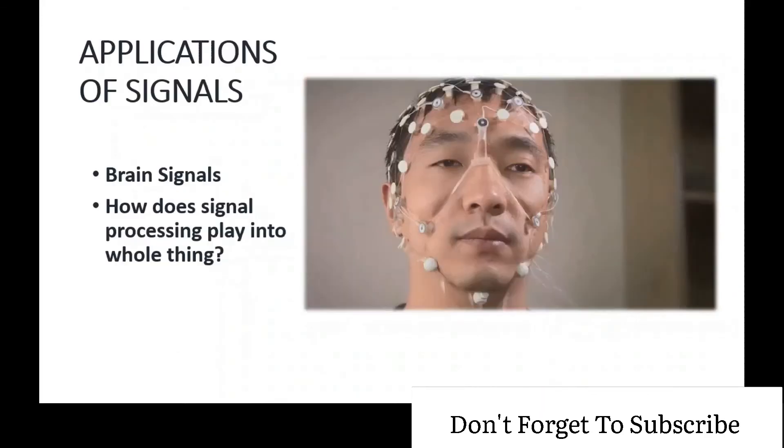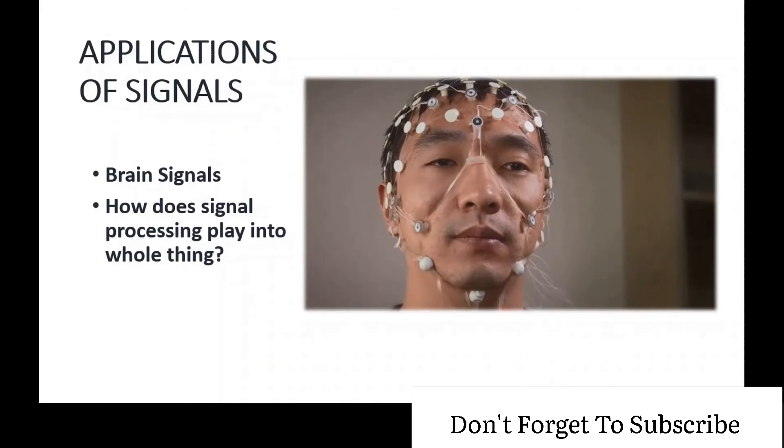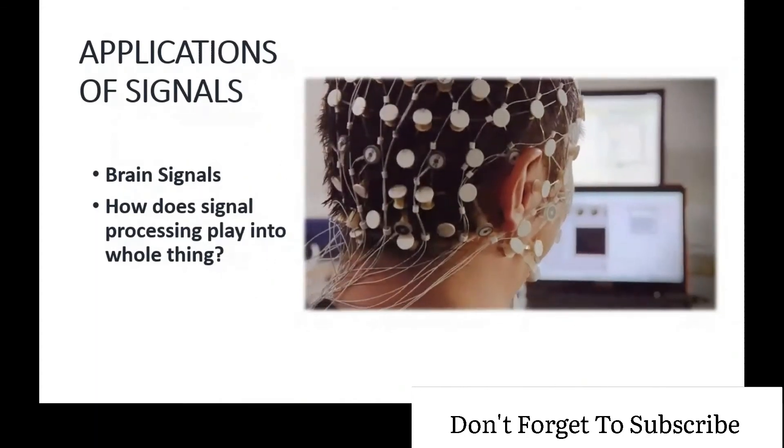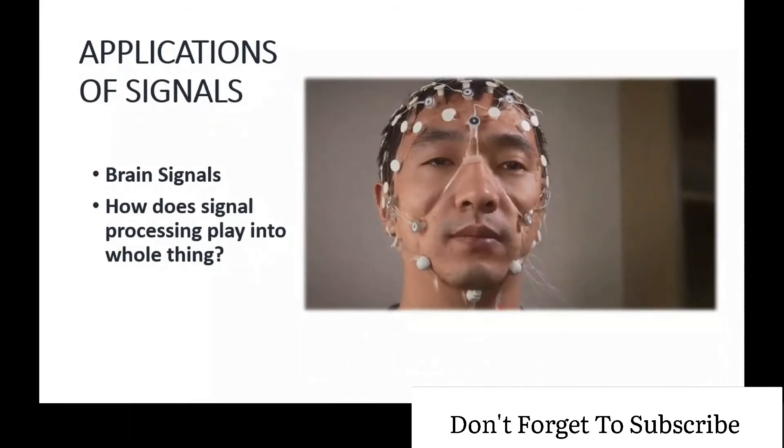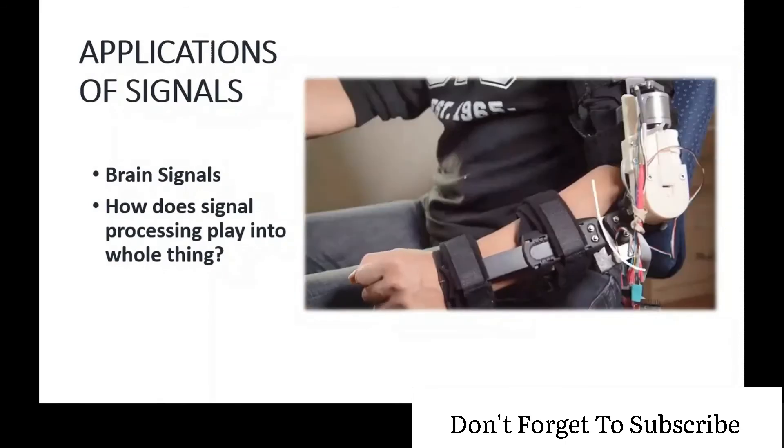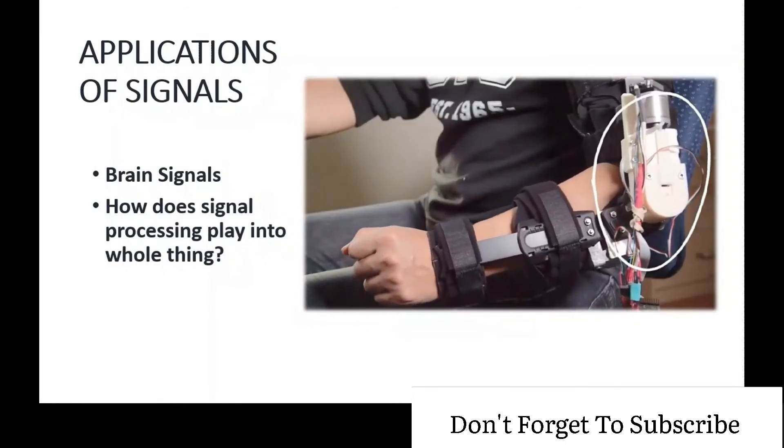If we talk about the biological analysis of signals, another application of signal processing and machine learning where instead of using sound waves they are using brain waves. The man is trying to tell the computer to move this arm brace using his thoughts.